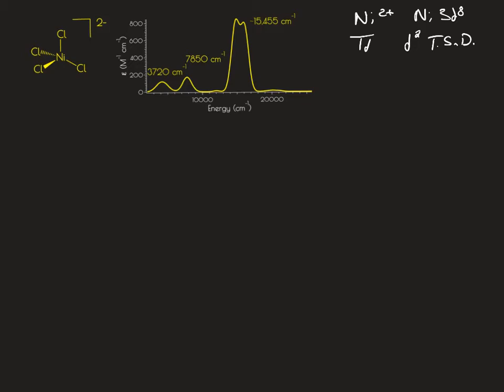A few things to point out about this electronic absorption spectrum: the extinction coefficients are much larger than what we had observed in OH symmetry. This is because these are now Laporte-allowed transitions as opposed to the Laporte-forbidden spin-allowed transitions observed in OH symmetry. In tetrahedral symmetry, you've lost that inversion center, so these transitions become more allowed.